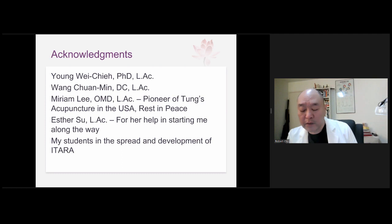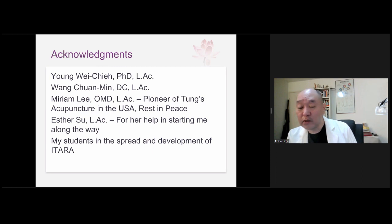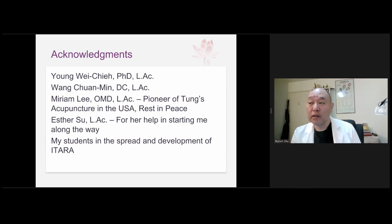In the mid to late 1950s, other acupuncturists started to copy Master Dong's method and get similar results. So he took out his Dong family points. Some people today use only the Dong family points exclusively, but that's not the proper way — they must be used with the rationale of the channels and imaging together to have the miraculous effect you're looking for.